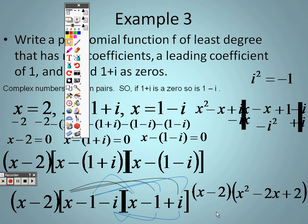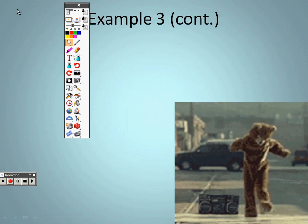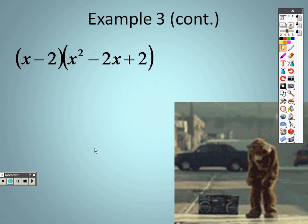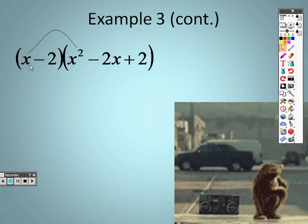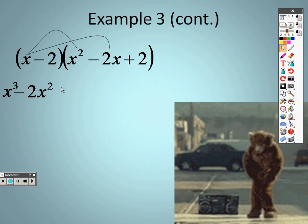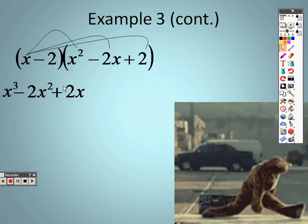So to finish off example 3. All I have to do is foil these two items. x times x² is x³. x times -2x is -2x². x times 2 is 2x.